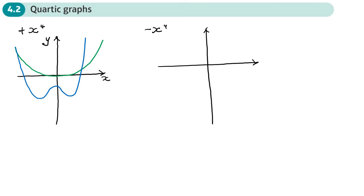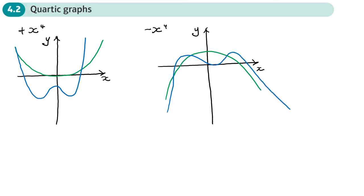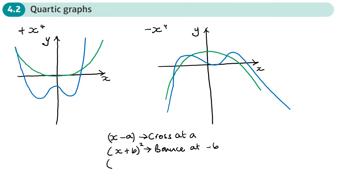Just to clarify — I mean quartic, not cubic. So it could be just the plain old N-shape, or an N-shape where there's all sorts of funny stuff going on in the middle. It's the factorizing that tells us whether the graph is going to cross or bounce off the axis. Something like (x - a) means it crosses the x-axis at a; something like (x + b) squared means it bounces at negative b; and something like (x + c) cubed means it crosses again at negative c.